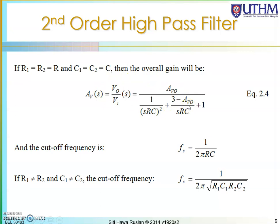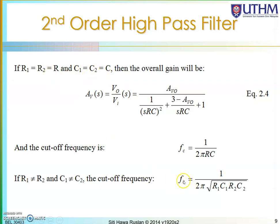The transfer function is clearly second order as it contains s². From this transfer function you can get the cutoff frequency, which is 1/(2πRC), similar to the first order high pass filter. This applies when R1 = R2 = R and C1 = C2 = C. If R1, R2 or C1, C2 are not equal, the cutoff frequency is 1/(2π√(R1·C1·R2·C2)).